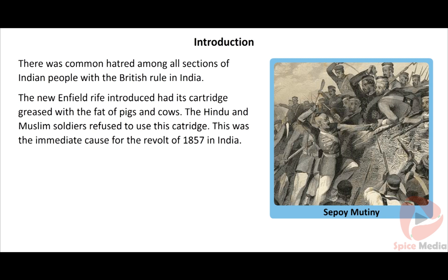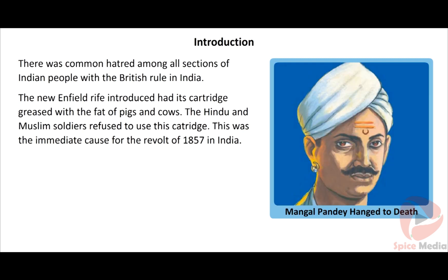The immediate cause was the introduction of a new Enfield rifle. Its cartridge was greased with the fat of pigs and cows, which were refused by Hindu and Muslim soldiers. This resulted in the Sepoy Mutiny in 1857. Mangal Pandey, an Indian soldier, killed a British officer for forcing him to use the rifle.